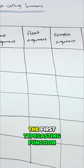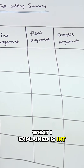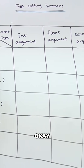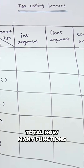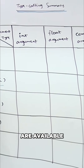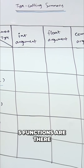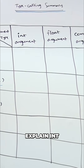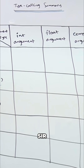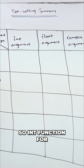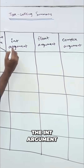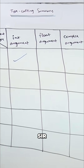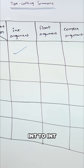The first typecasting function I explained is int. There are five functions available in total. The first one is the int function. For an int argument passed to the int function, no problem — int to int conversion works fine.